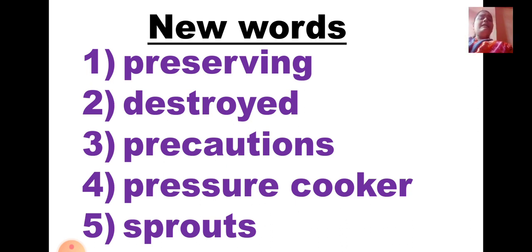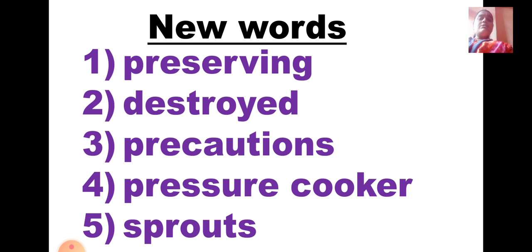Second one is D-E-S-T-R-O-Y-E-D, Destroyed. Destroyed means to damage something. Third one, P-R-E-C-A-U-T-I-O-N-S, Precautions. Precautions means safety measures to be taken for handling foodstuffs so that they do not get damaged or spoiled.